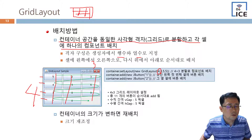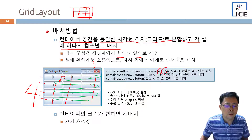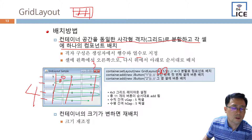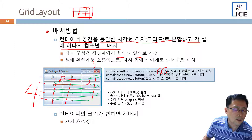그리고 그 다음에 호리전탈 갭, 그 다음에 버티칼 갭. 이렇게 해서 호리전탈 갭하고 버티칼 갭을 주어가지고서 그리드 레이아웃을 설정합니다. 그러면 얘네들이 들어갈 때 이런 식으로 순서대로 채워지는 것을 알 수 있습니다.